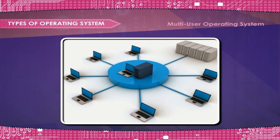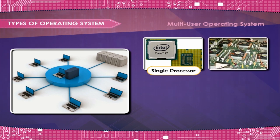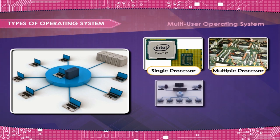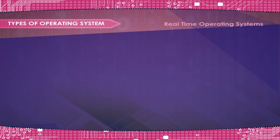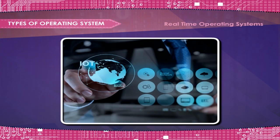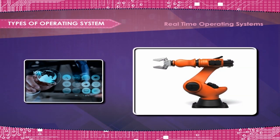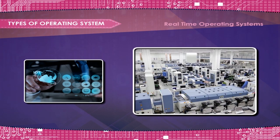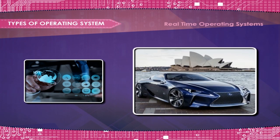There are several different types of Multi User Systems: Single Processor, Multiple Processor, Networked Systems, and Multitasking Systems. Real Time Operating Systems are used for direct control over electromechanical equipment such as industrial robots, factory processors, power stations, airplanes, trains, and cars.